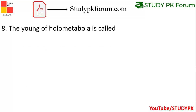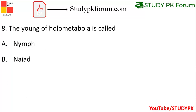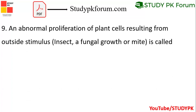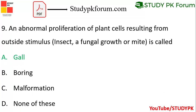Question 8: The young one of Holometabola is called — Nymph, Nide, or Larvae? Larvae is the right answer, option C. Question 9: An abnormal proliferation of plant cells resulting from an outside stimulus is called — Gall. Option A is the right answer.